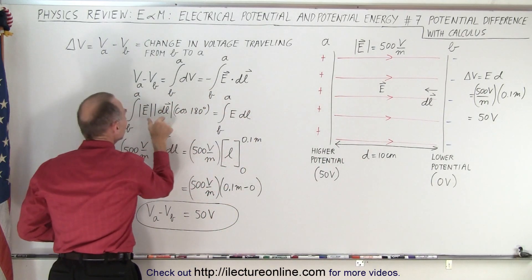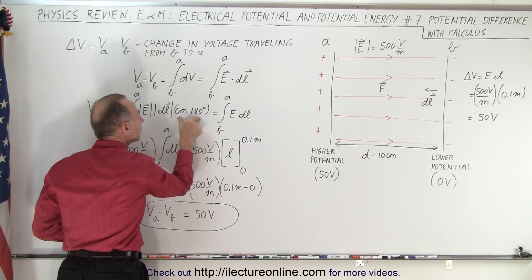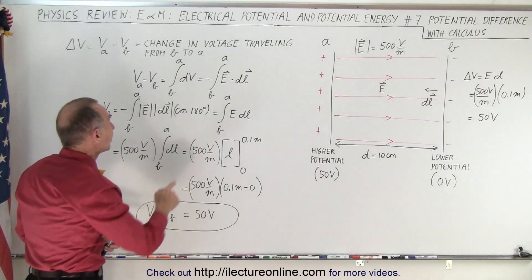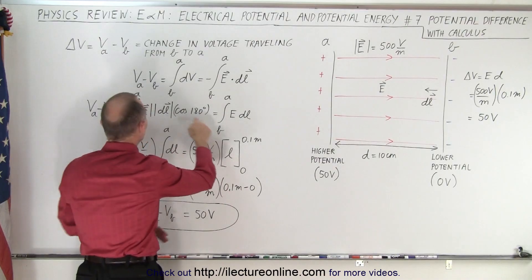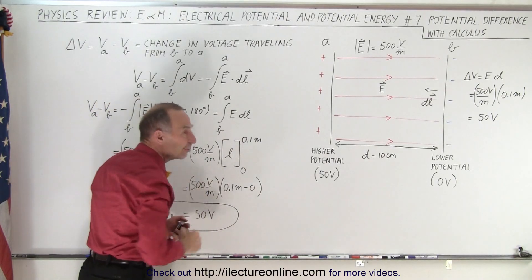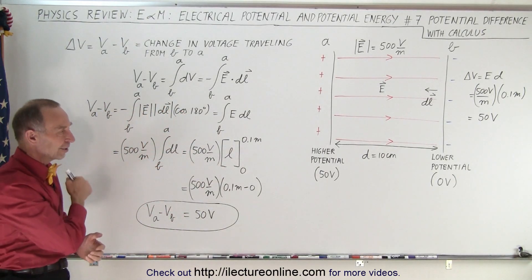We turn those into magnitudes times the cosine of the angle between them. That takes care of the sign, the direction of motion. This negative sign, if they're in opposite direction, will cancel this negative sign, and we end up with a positive change in voltage. And that's how it's done.